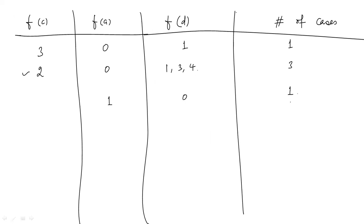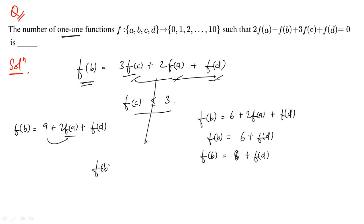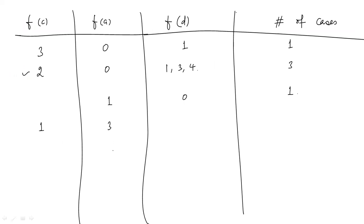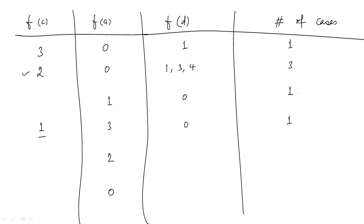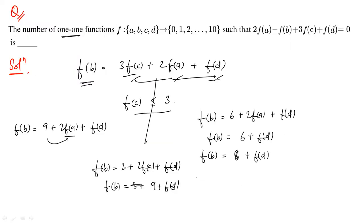Case f(c) = 1: The equation becomes f(b) = 3 + 2f(a) + f(d). The maximum value of f(a) is 3, since 2×4 + 3 = 11 exceeds 10. Also f(a) ≠ 1, so f(a) ∈ {0, 2, 3}. When f(a) = 3: f(b) = 9 + f(d), and f(d) can be 0 or 2 (since 1 and 3 are taken) — two cases.